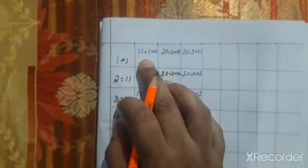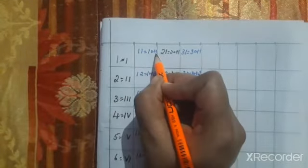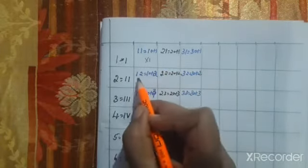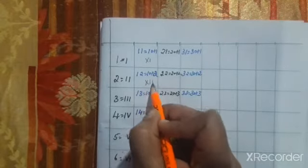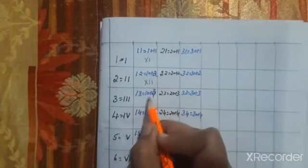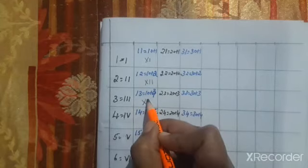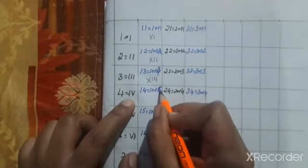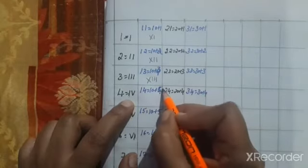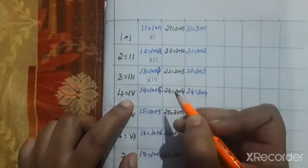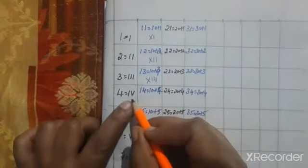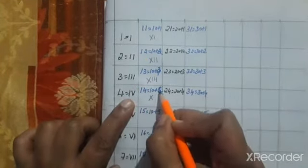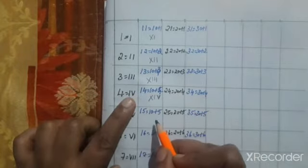How to write 11? 10 plus 1 — X plus I gives XI. 12 is 10 plus 2: XII. 13 is 10 plus 3: XIII. For 14, we cannot write four I's after X. 14 means 10 plus 4, and 4 is IV, so we write XIV directly. 15 is 10 plus 5: XV. 16 is 10 plus 6: XVI.